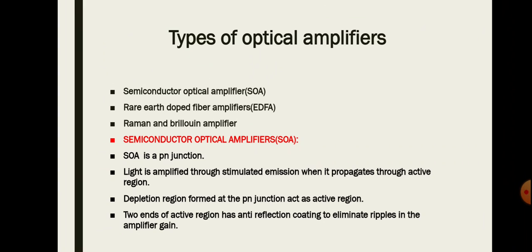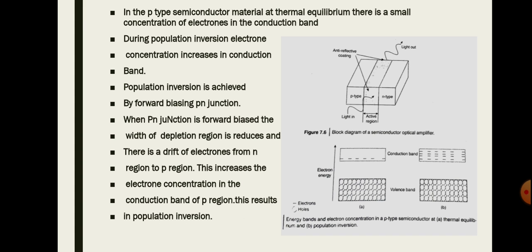The semiconductor optical amplifier is a P-N junction material where light is amplified through stimulated emission as it propagates through the active region. For stimulated emission to take place, external energy is required. A depletion region is formed between the P and N junctions, acting as the active region. Anti-reflection coating at the two ends of the active region eliminates ripples in the amplifier gain.